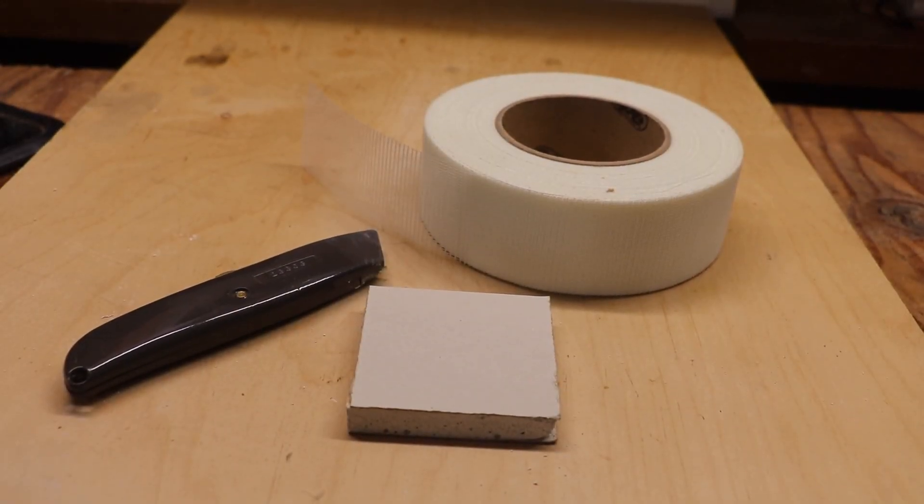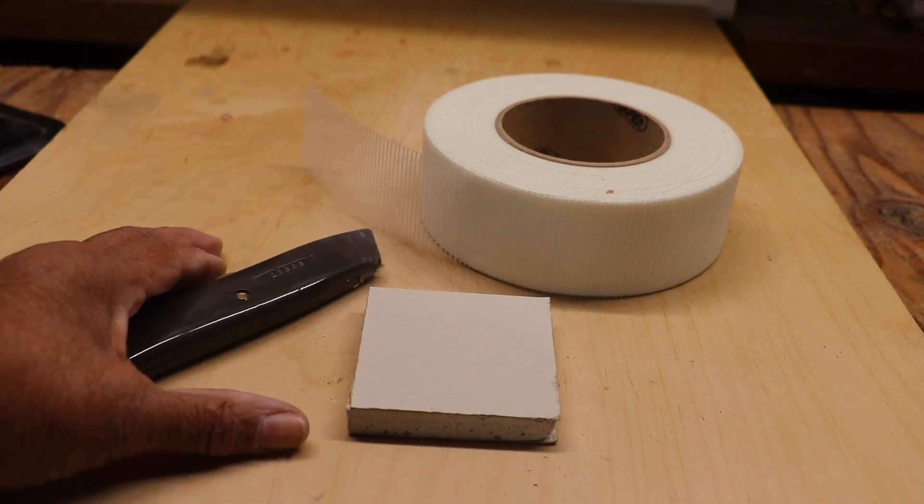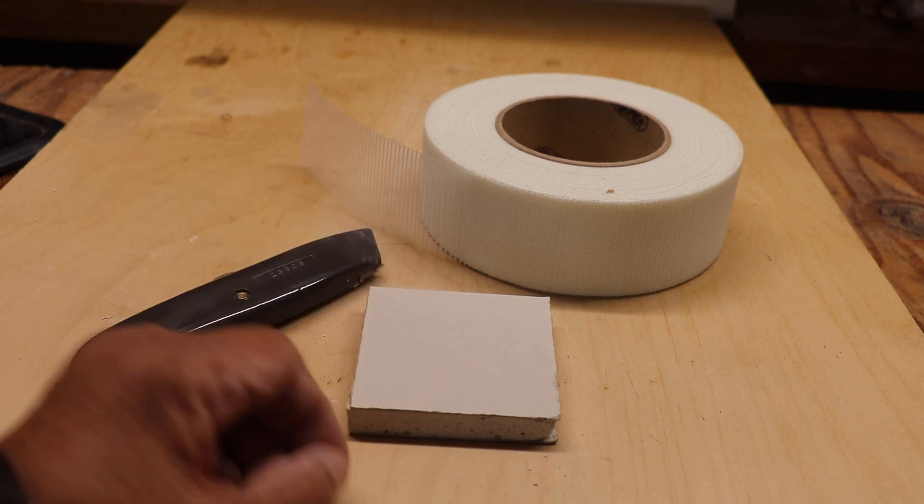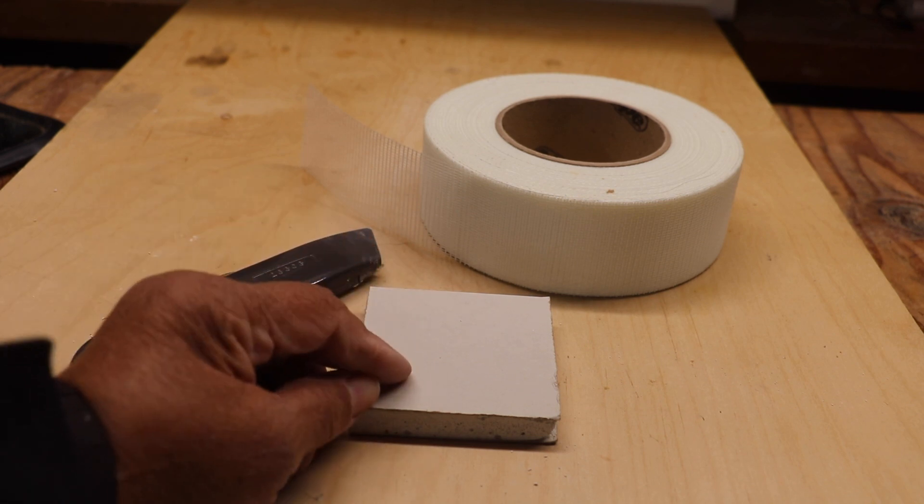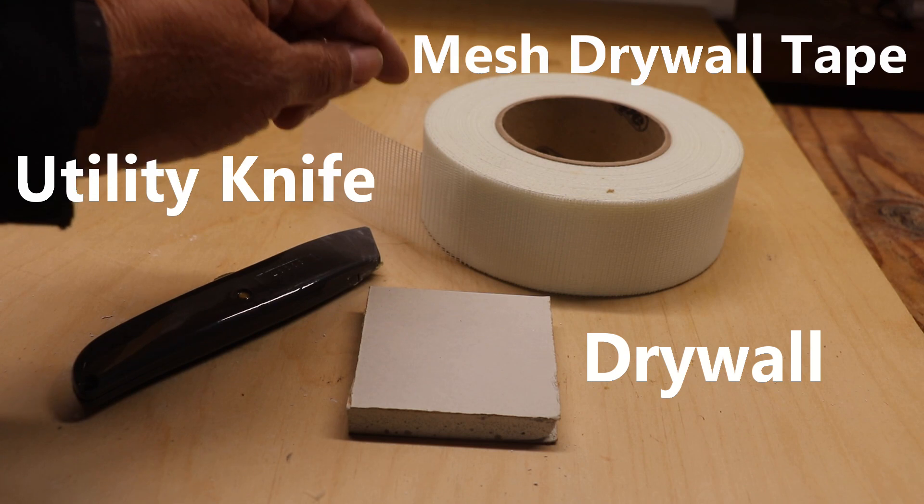Now our first patch is by far the easiest patch, but it's also the less durable patch. It requires very little tools and very little resources. Now what you're going to need is a piece of scrap drywall for the patch, a utility knife, and mesh tape.